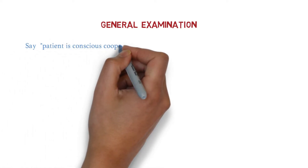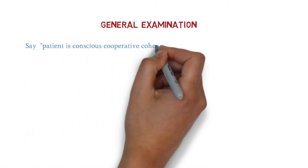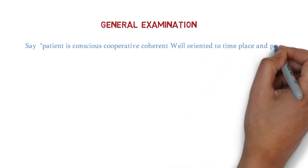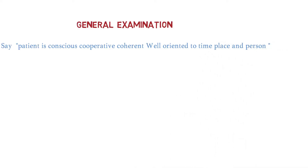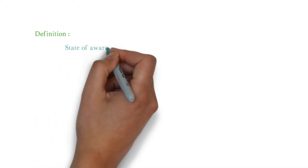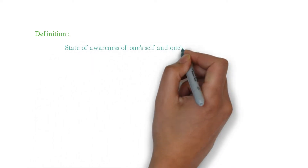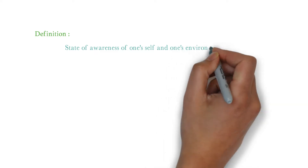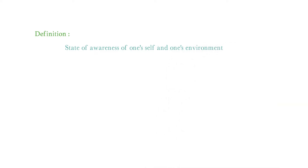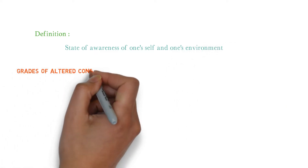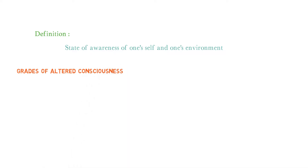Now, the examiner may ask: why did you check for consciousness? You will have to say that consciousness is a state of awareness of oneself and one's environment. The examiner can then ask: what are the grades of altered consciousness? There are four grades of altered consciousness.